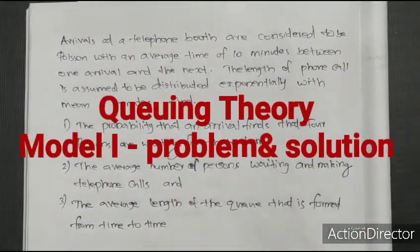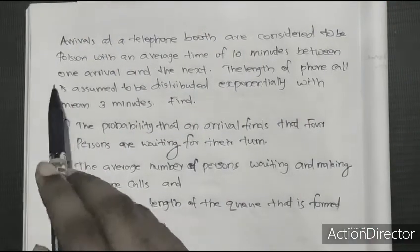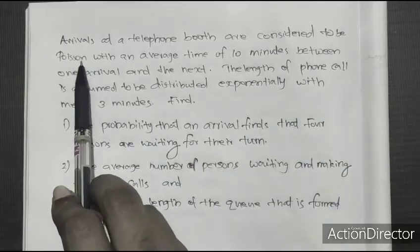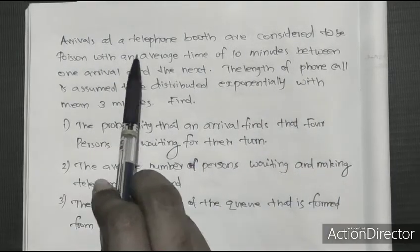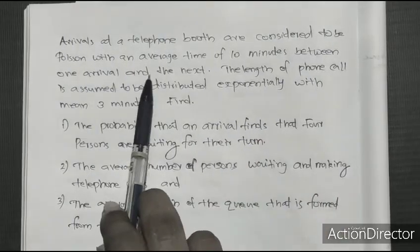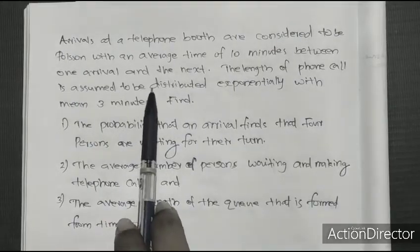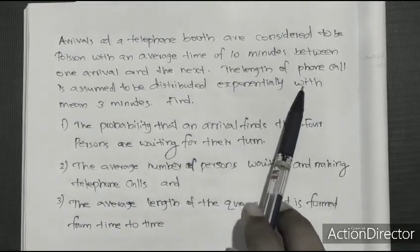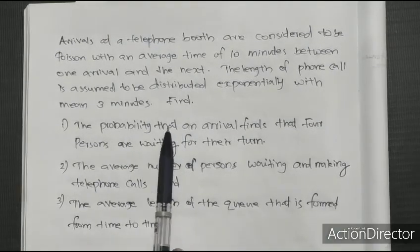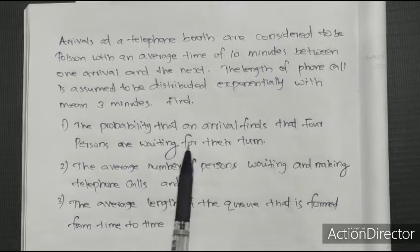Hi all. I am going to talk to you about the main problem. Arrivals at a telephone booth are considered to be Poisson distributed with an average time of 10 minutes between one arrival and the next. The length of phone call is assumed to be distributed exponentially with mean 3 minutes. Find the probability that an arrival finds that 4 persons are waiting for their turn.